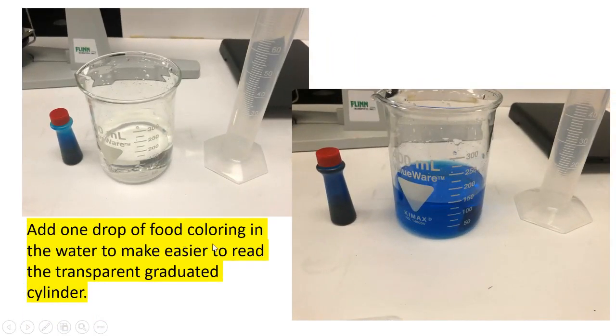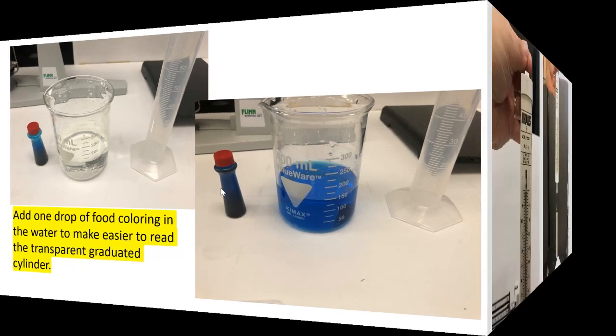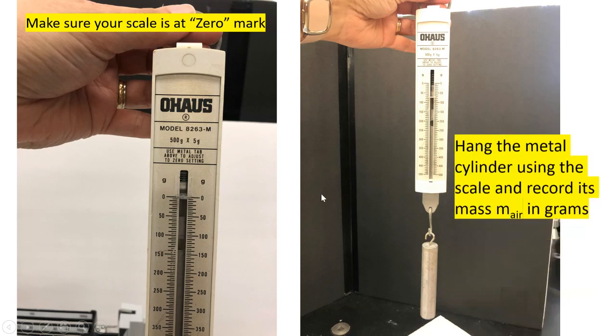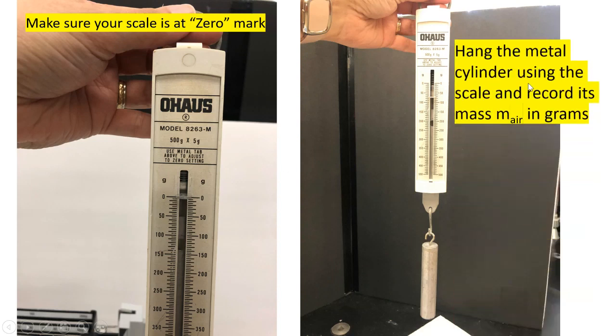Add one drop of food coloring in the water to make it easier to read the transparent graduated cylinder. Make sure your scale is at zero mark and hang the metal cylinder using the scale and record its mass in the air in grams.